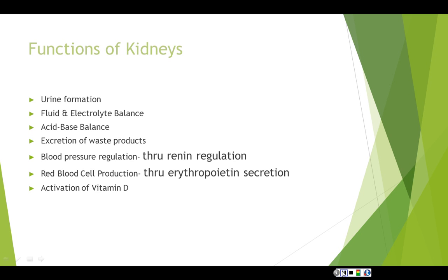The kidneys are responsible for reabsorbing sodium and managing potassium through aldosterone, as well as reabsorbing or releasing bicarbonate. For blood pressure regulation, the kidneys release renin, which triggers the renin-angiotensin system — angiotensin I, angiotensin II, and aldosterone — causing vasoconstriction and increased blood pressure. When oxygen levels are low, the kidneys secrete erythropoietin to stimulate red blood cell production and also activate vitamin D.